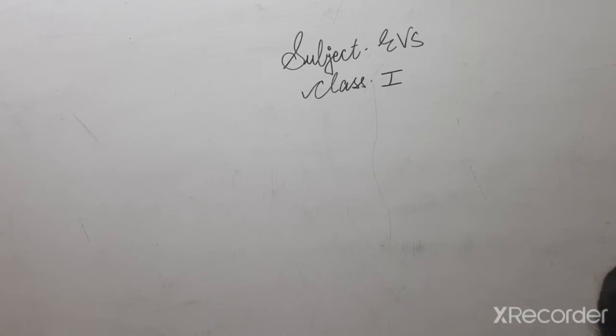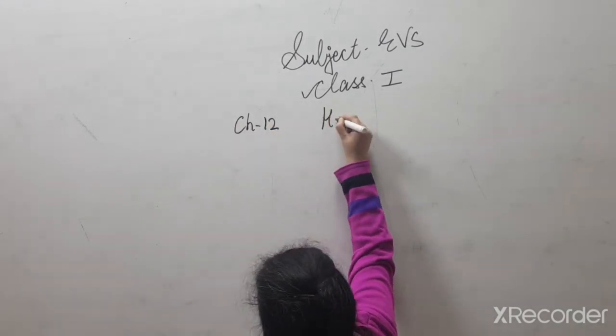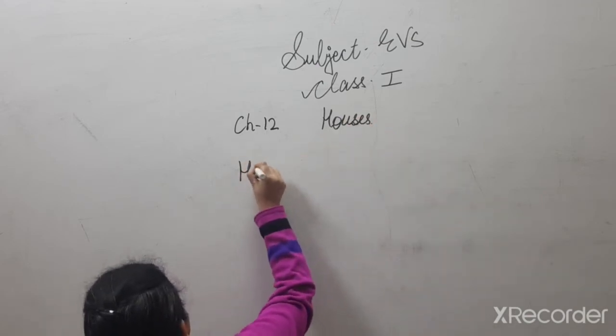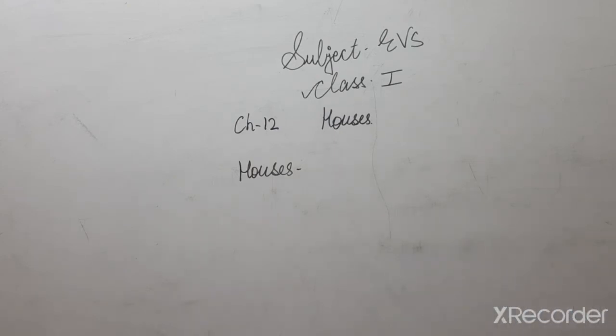We need to do a new topic, that is chapter number 12, houses. The very first question arises, what do you mean by houses? Houses are your home. Jahaan hum rehte hain, unko hum houses kehte hain. Like food, water, air, clothes are basic needs, houses are also the basic needs of a human being.